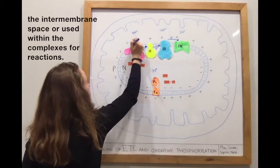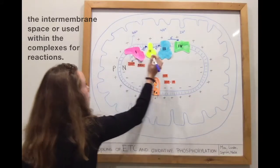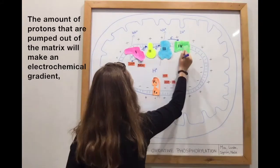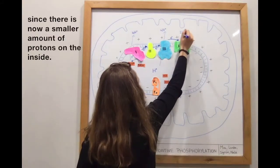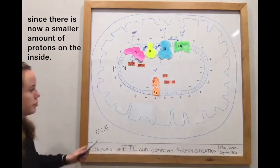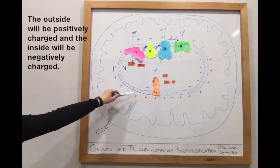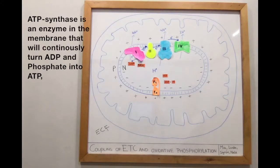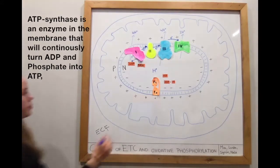The amount of protons that are pumped out of the matrix will make an electrochemical gradient. Since there is now a smaller amount of protons on the inside, the outside will be positively charged and the inside will be negatively charged. ATP synthase is an enzyme in the membrane that will continuously turn ADP and phosphate into ATP by pumping the protons from the intermembrane space back into the matrix.